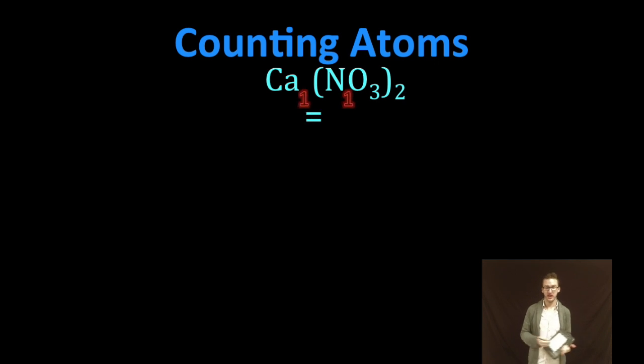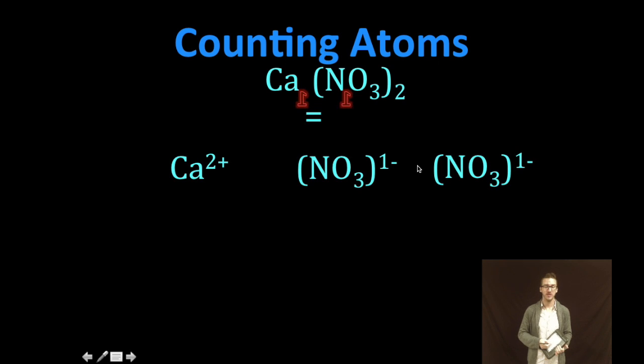What does this mean? We've got one calcium ion and two nitrate ions. But remember that within each nitrate ion, we've got one nitrogen and three oxygen. So sometimes it's easier to write it out like this.